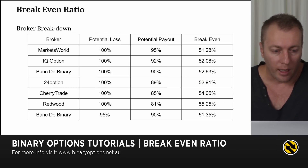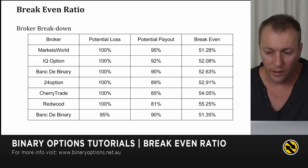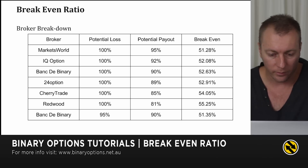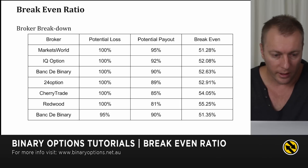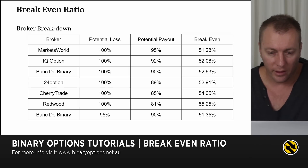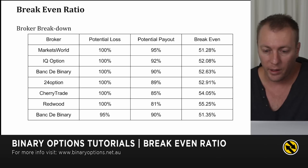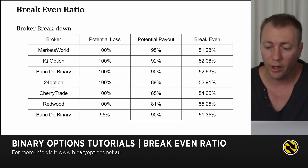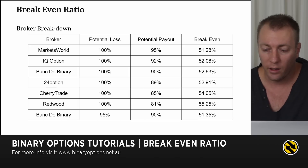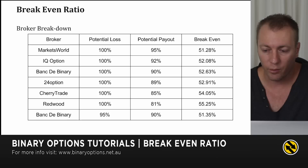Here's a table of some popular brokers and their potential break-even ratios, sorted from best to worst. Markets World, based on a potential loss of 100% and potential payout of 95%, has a break-even ratio that drops to almost 51%, giving you a higher buffer zone for losing more trades while still getting ahead.